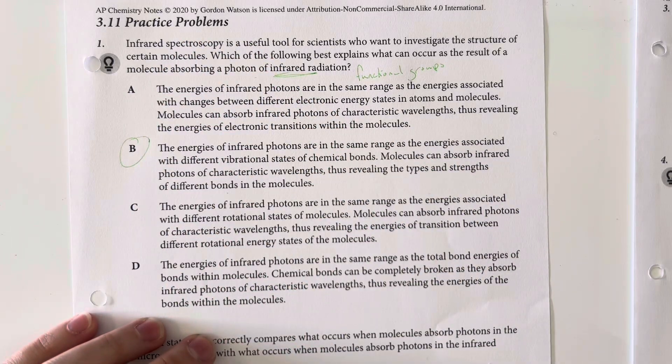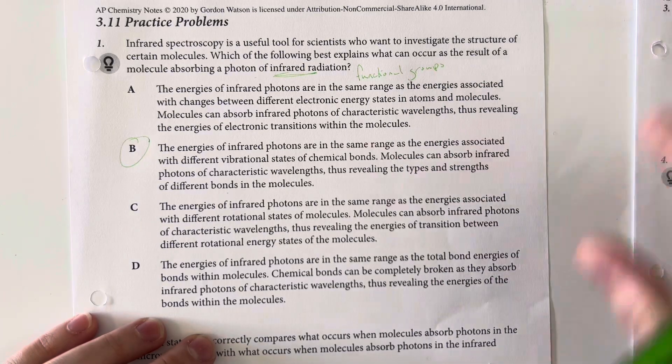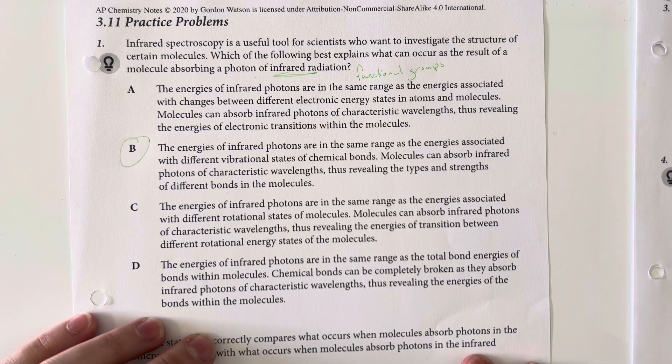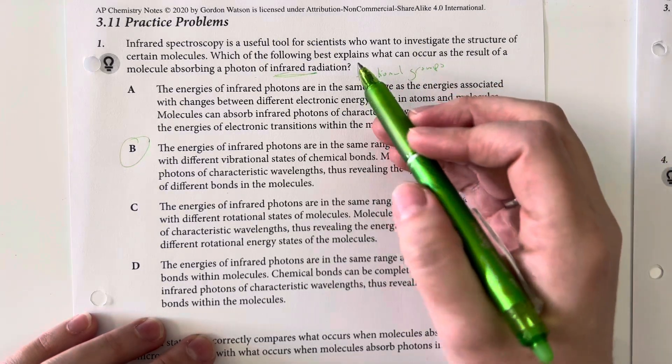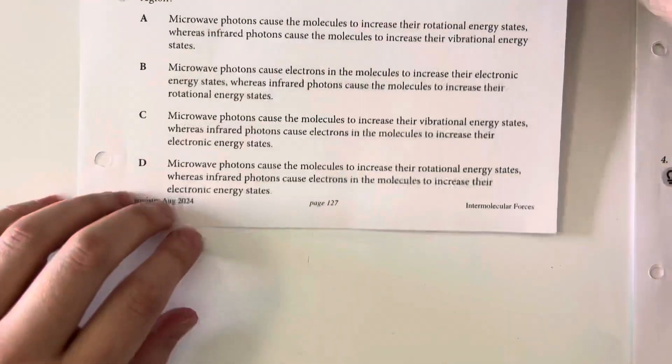The energies of the infrared photons are in the same range as the energies associated with the different vibrational states of chemical bonds. Molecules can absorb infrared photons of characteristic wavelengths, thus revealing the types and strengths of different bonds in the molecules. That's going to reveal our functional groups. And so, option B is going to be our best choice here.